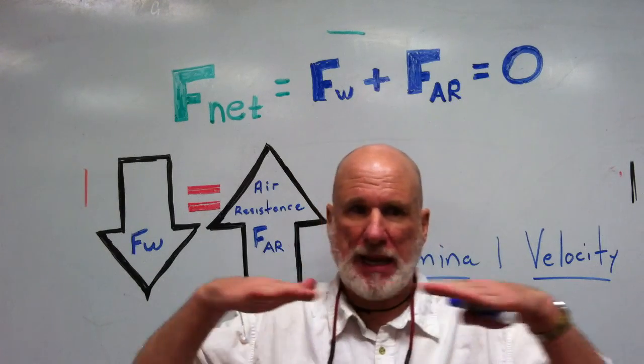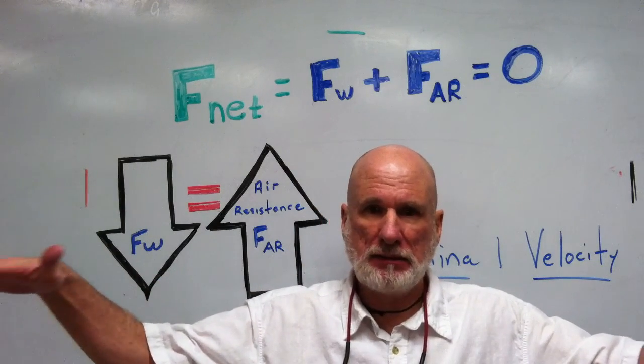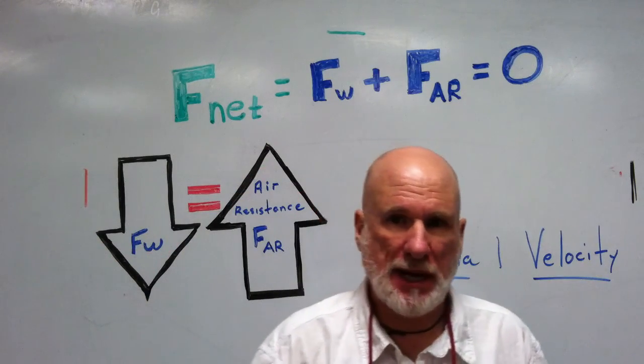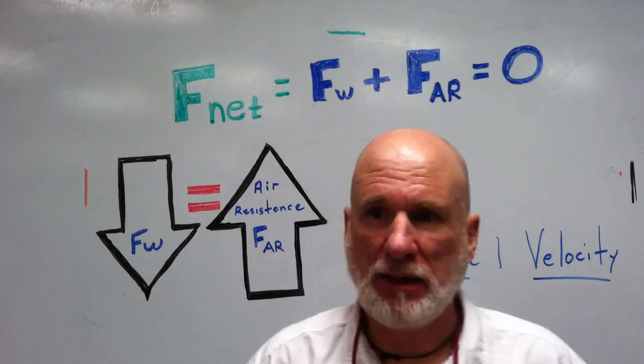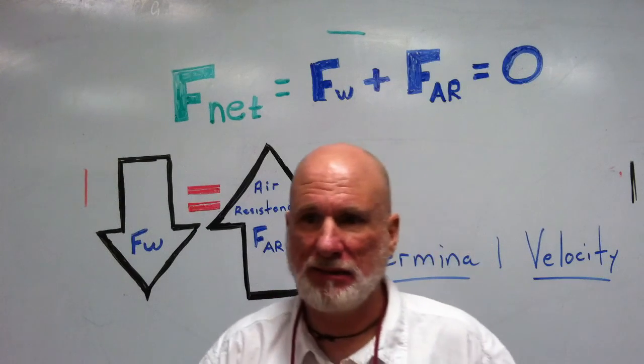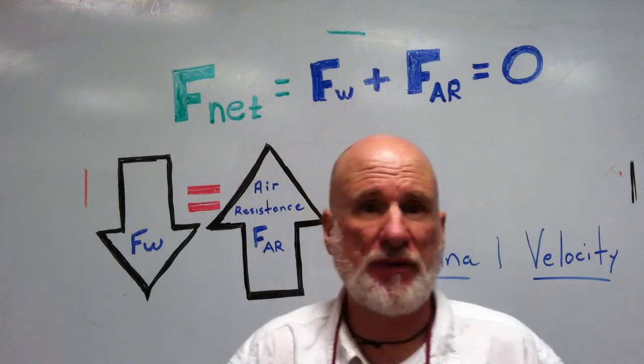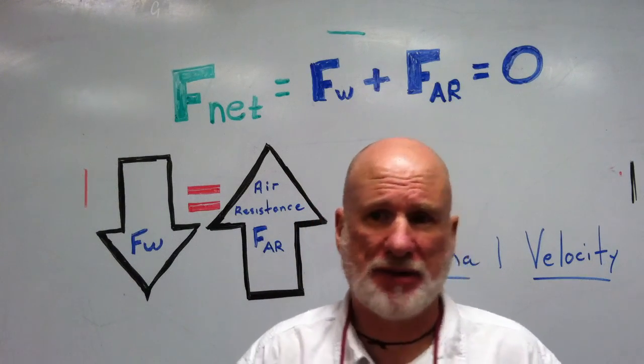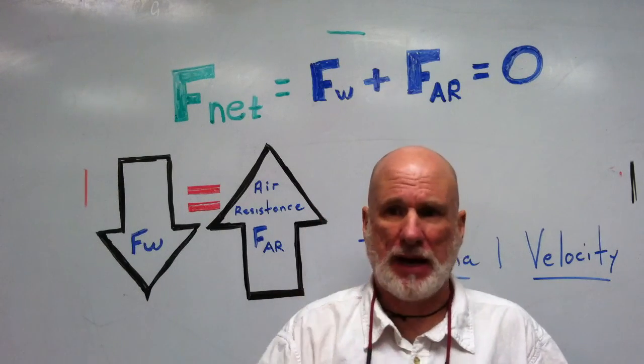You jump out of a plane and before you pull the parachute you might achieve a constant velocity of 150 miles an hour, 175 miles an hour. You stop accelerating.